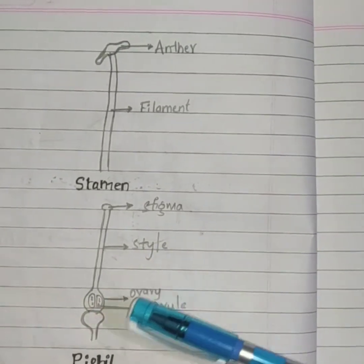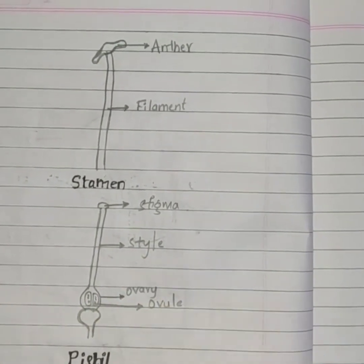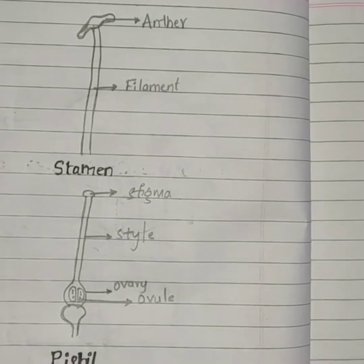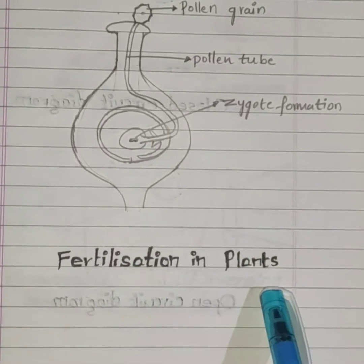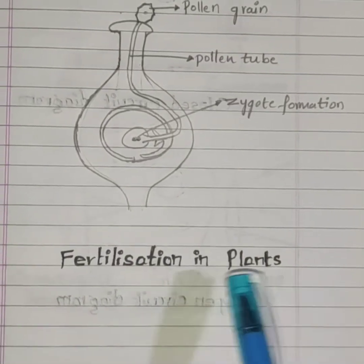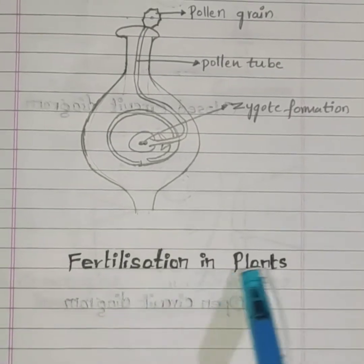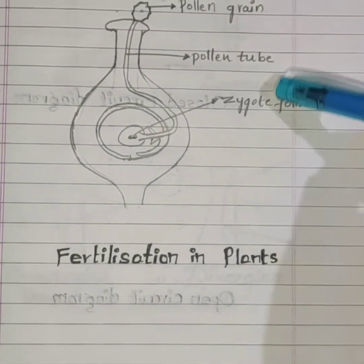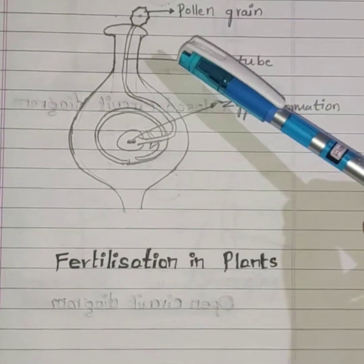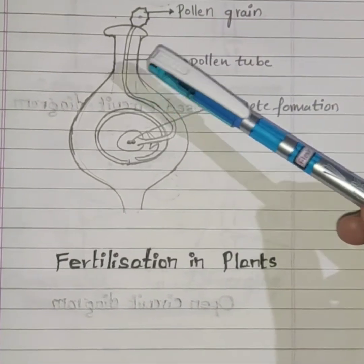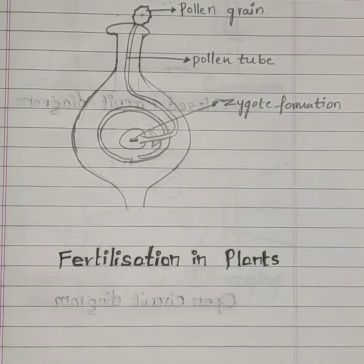This is the ovary and these are the ovules. The next diagram is fertilization in plants — how fertilization occurs in plants. This process involves these all parts: first one, this is pollen grain, pollen tube, and the zygote formation.